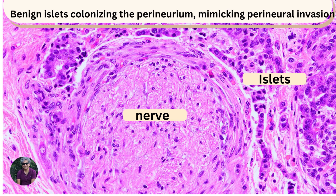Here's example number one. These are benign islets colonizing the perineurium, mimicking perineural invasion. This is often seen more frequently these days following neoadjuvant therapy, particularly in cases where you see massive pseudohypertrophy of the islets.